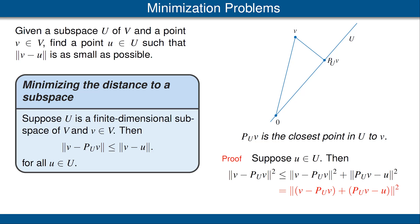The reason for this is the first term, v minus P_U of v, is a vector that is in the orthogonal complement of U, as we've seen previously. And the other term, P_U of v minus u, is in U. So those two vectors are orthogonal, and we have this equality by the Pythagorean theorem.